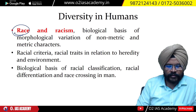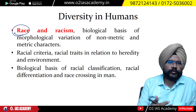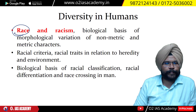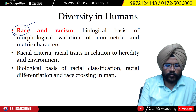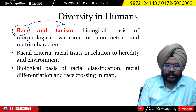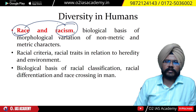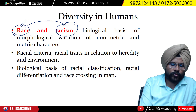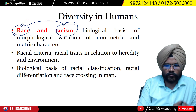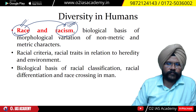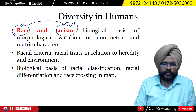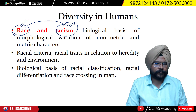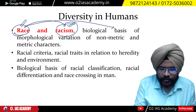The first topic is race and racism. Racial diversity refers to the biological and physical diversity found among humans. Racism, on the other hand, is a cultural notion — a belief that certain racial groups are superior and certain racial groups are inferior.